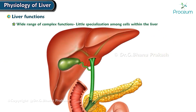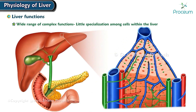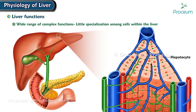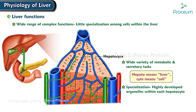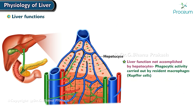Given this wide range of complex functions, there is amazingly little specialization among cells within the liver. Each liver cell, or hepatocyte, performs the same wide variety of metabolic and secretory tasks. "Hepato" means liver; "cyte" means cell. The specialization comes from the highly developed organelles within each hepatocyte. The only liver function not accomplished by hepatocytes is the phagocytic activity carried out by the resident macrophages, known as Kupffer cells.